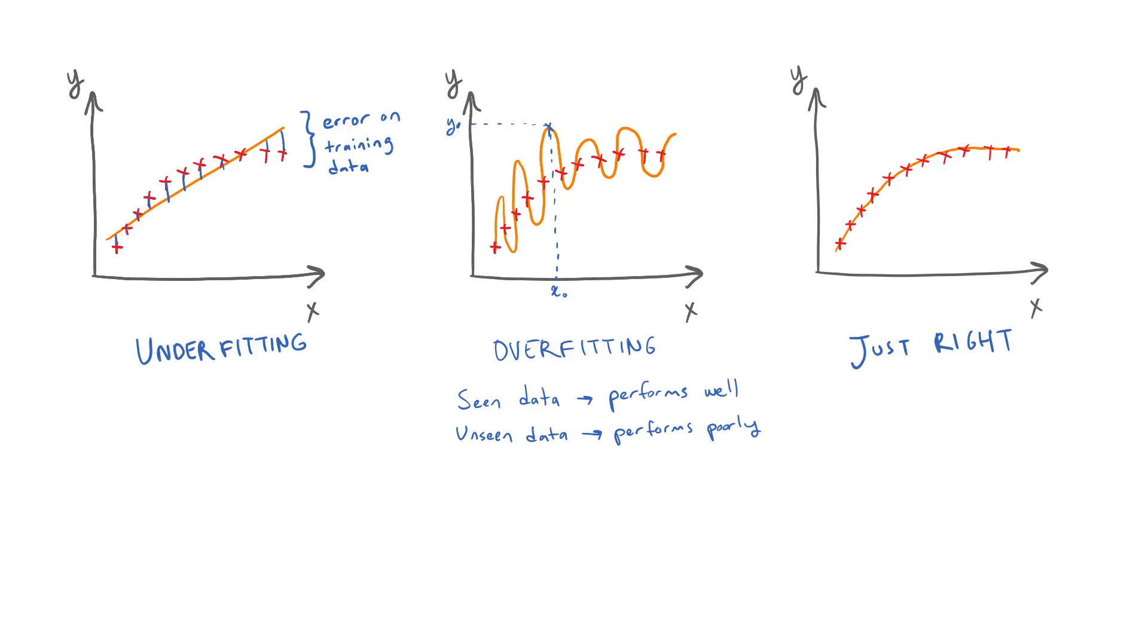You might wonder how we know if a model performs well on unseen data if it's, well, unseen. We can't test a model on data points that are truly unseen, but we can hide a portion of our data during training and evaluate the model on that hidden part.